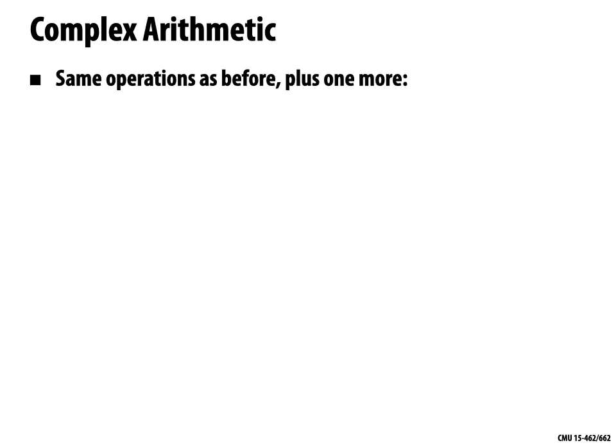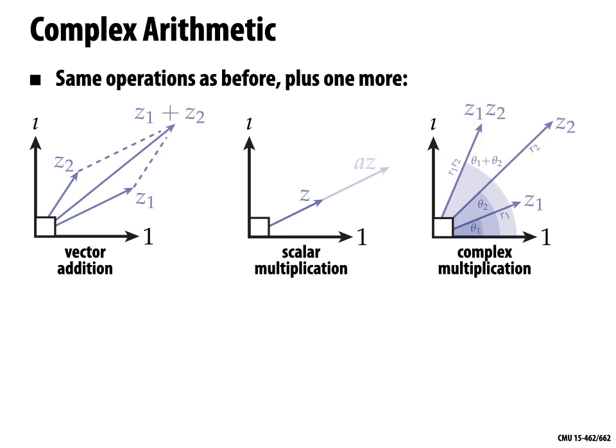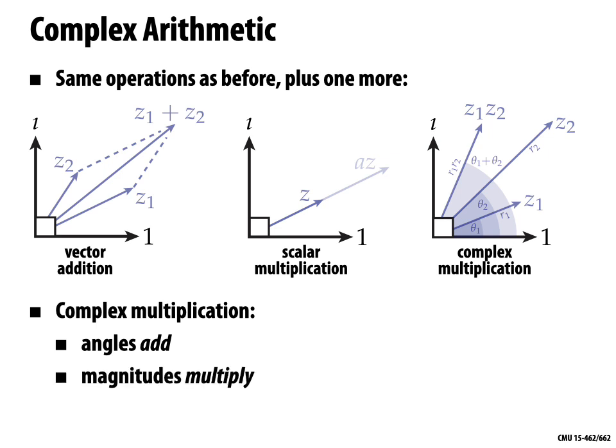What does complex multiplication do geometrically? If I have two vectors in the plane, z1 and z2, and I take their complex product, the angles are going to add. If z1 is at angle θ1 with the horizontal and z2 is at angle θ2, then the product is going to be at angle θ1 + θ2. And magnitudes multiply: if z1 had length r1 and z2 had length r2, the length of the product is r1·r2. In polar coordinates: multiply the magnitudes and add the angles.